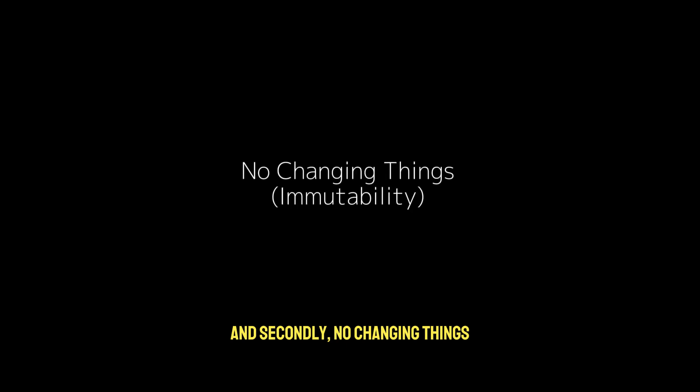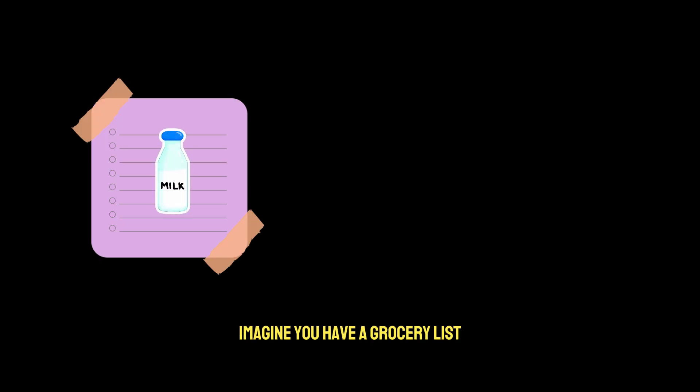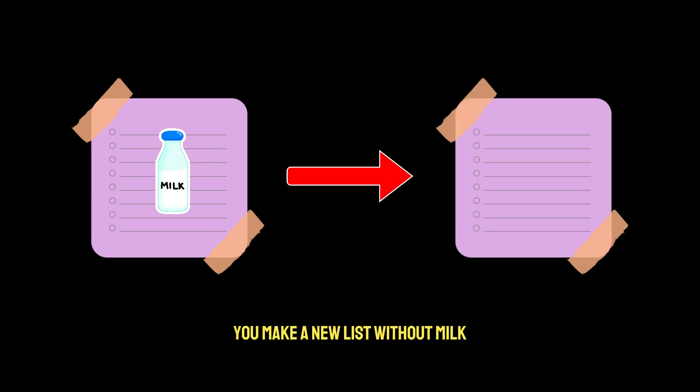And secondly, no changing things, otherwise known as immutability. Data does not change after it's created. Instead, you make new data. Imagine you have a grocery list. Instead of crossing out milk or modifying it, you make a new list without milk.